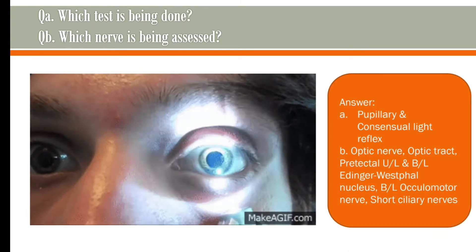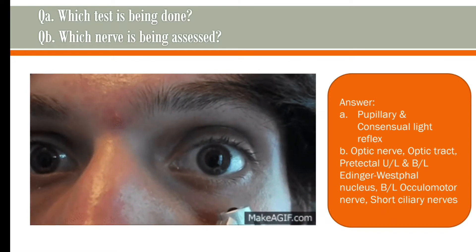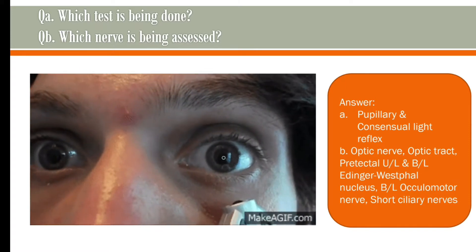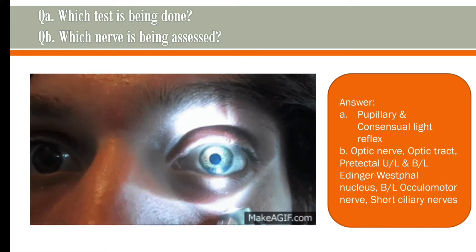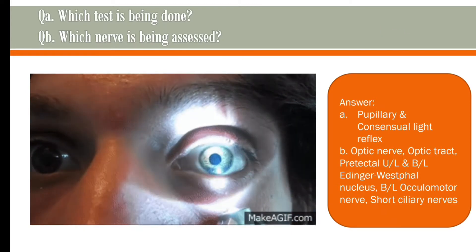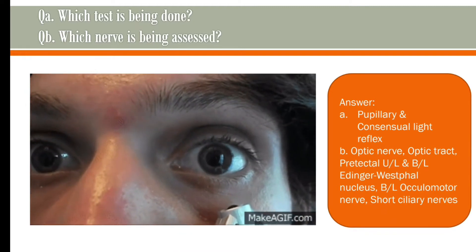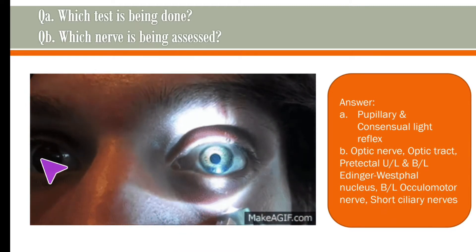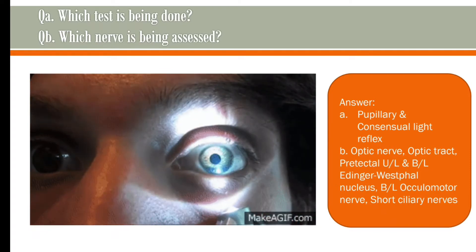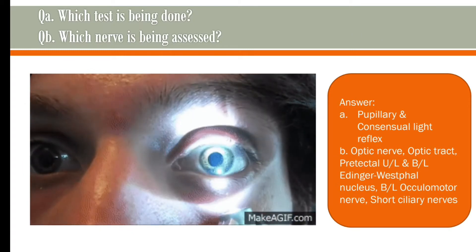In this image, a beam of light is being focused on this eye. If you find constriction in the same eye, that is the direct pupillary light reflex. What you're seeing here is direct pupillary light reflex. At the same time, if you find constriction in the opposite eye, that will be indirect or consensual pupillary light reflex.